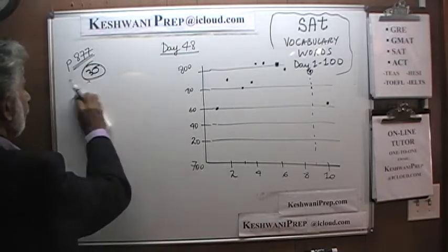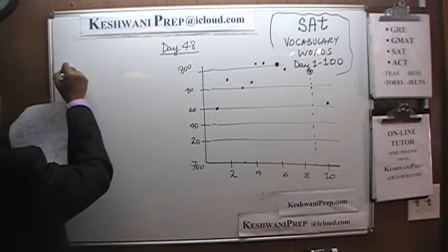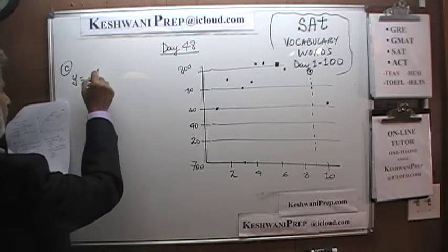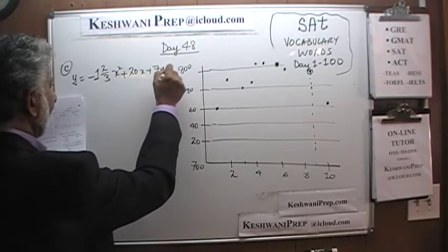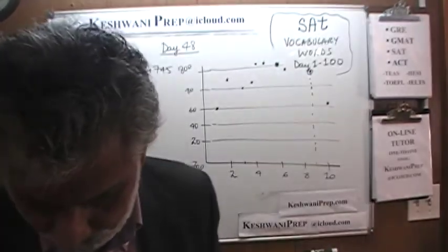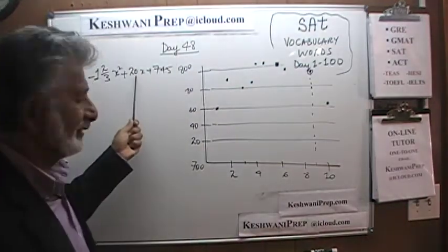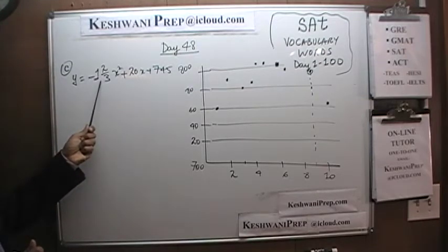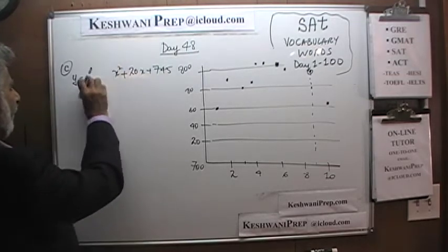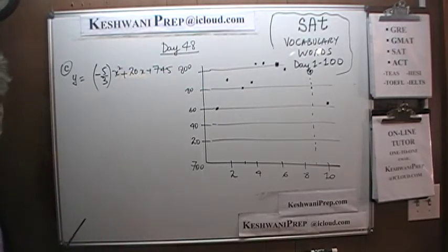Let's look at answer choice C. It says y equals negative two-thirds x squared plus 20x plus 745. The book lists negative 1.67, which is essentially negative one and two-thirds, or negative five-thirds. Similarly, the coefficient of x is approximately 19-point-something — just use 20. Let's simplify by writing negative five-thirds for the x-squared coefficient and keep the other terms as stated.